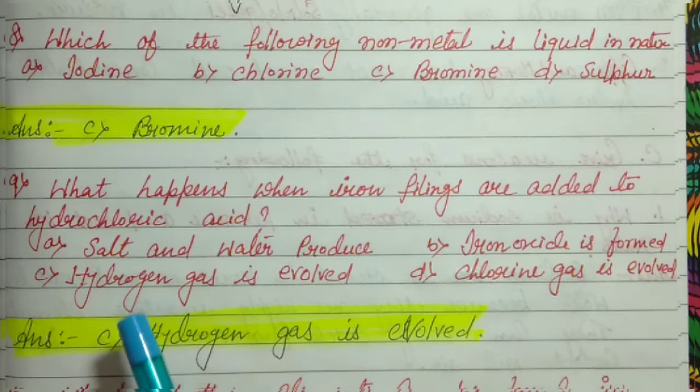Question number 10: Which of these elements can be found in nature in a pure/native state — lithium, iron, aluminium, or gold? The answer is gold, which is found in the free state in nature.